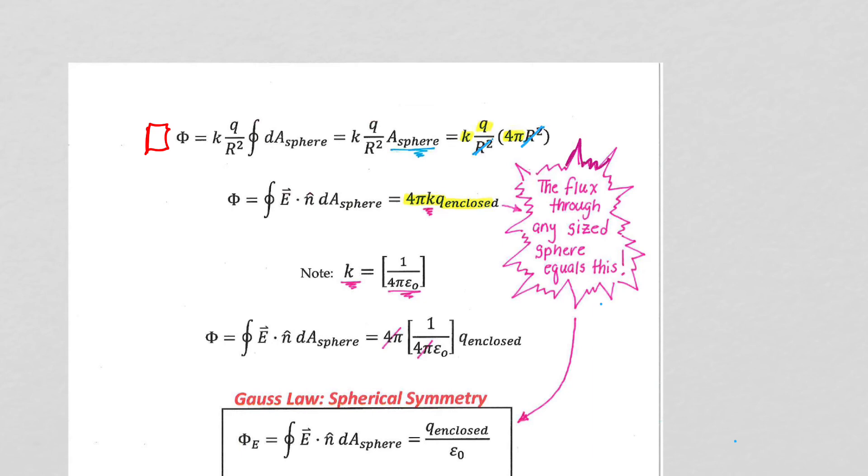is that the size of that sphere really didn't matter. We could have made a small theoretical construct sphere or a really, really, really big theoretical construct sphere. The r's cancel out. The flux is the same no matter the size.